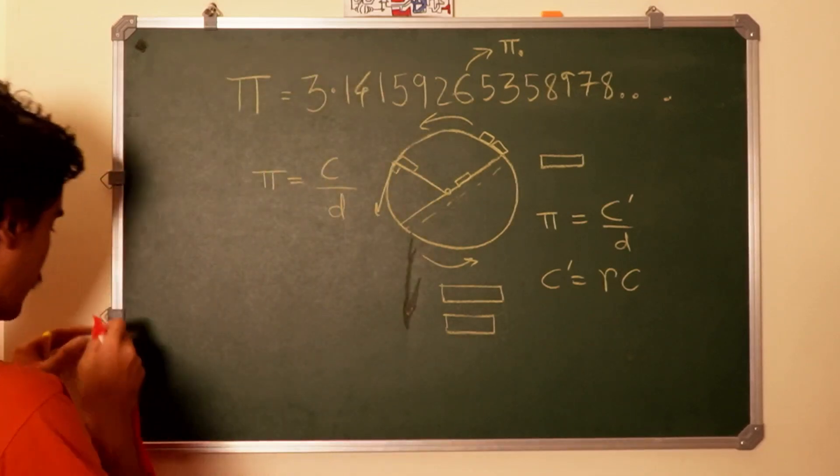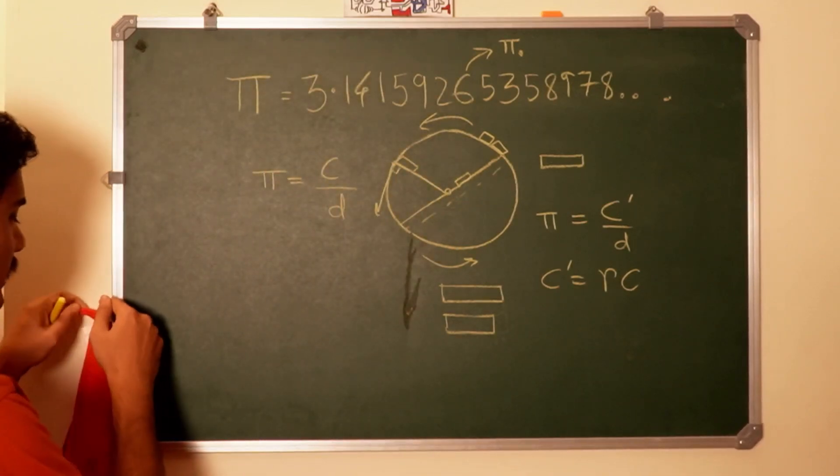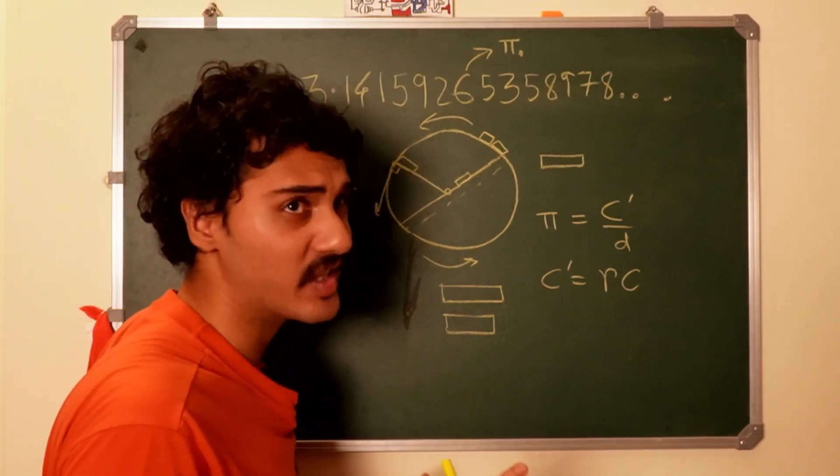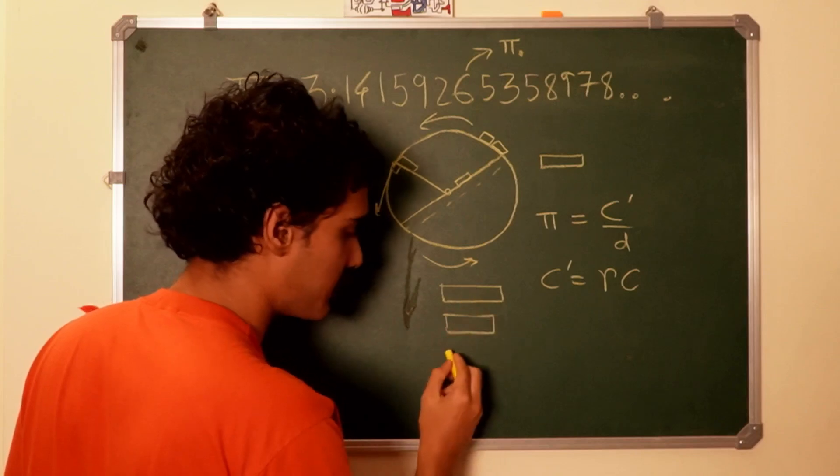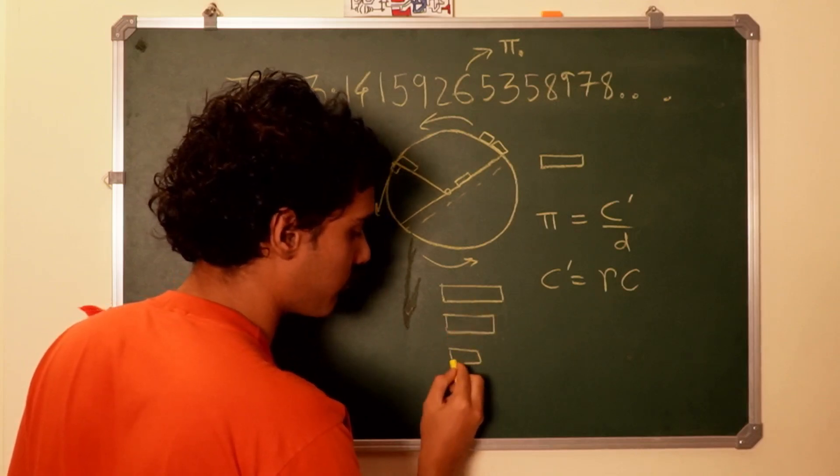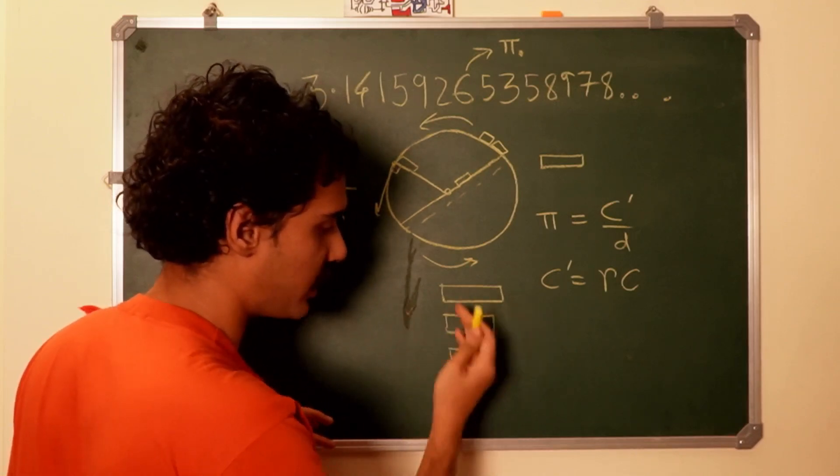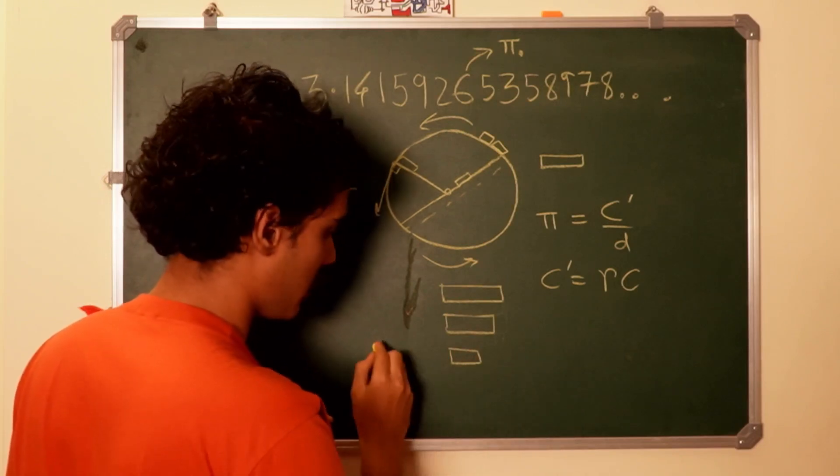For example, if you are traveling at a certain very high speed, extremely high speed, this meter stick would shrink to 0.5 of it—50 percent—and then gamma would be 2.